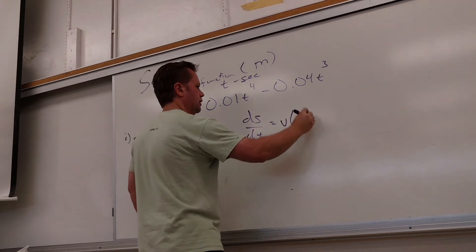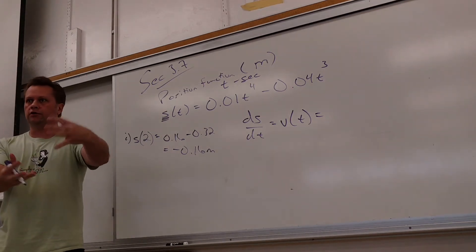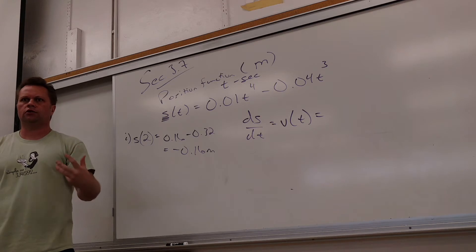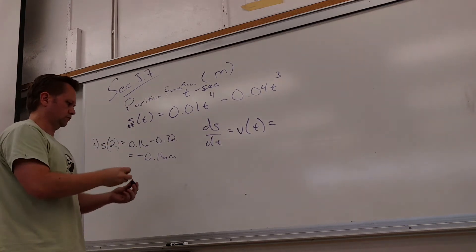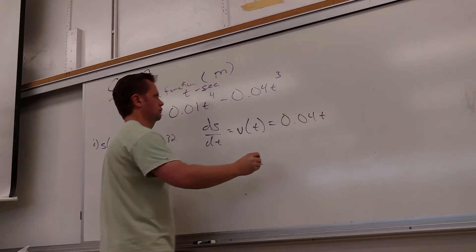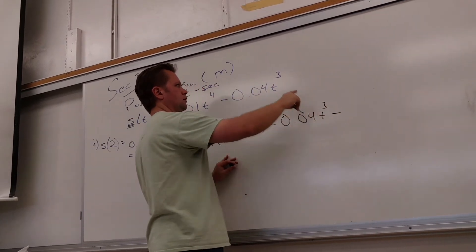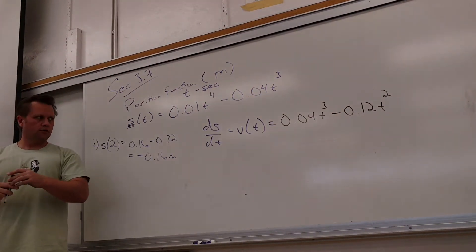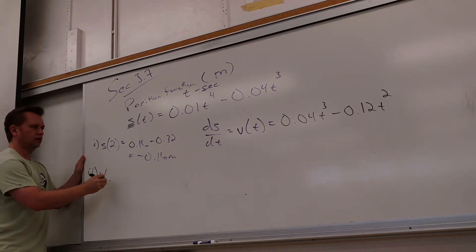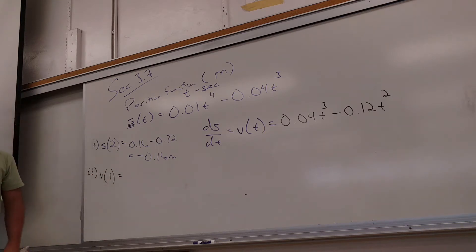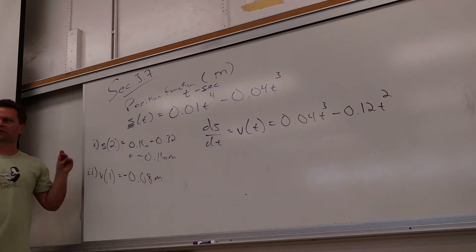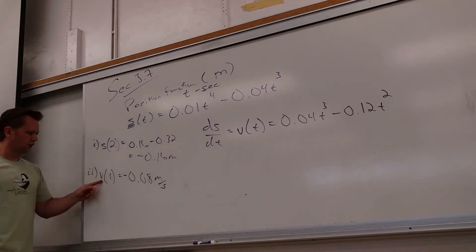So I can call this v(t) — I make a new function. Whenever I take a derivative of an existing function, I create a new function. It means something according to what the original function was — it's the rate of change. What do I get when I differentiate? 0.04t³ minus 0.12t². Just the power rule. Then I can ask similar questions — like what's the velocity at 1 second? You get negative 0.08 meters per second. What's the negative tell you? It's moving backwards.